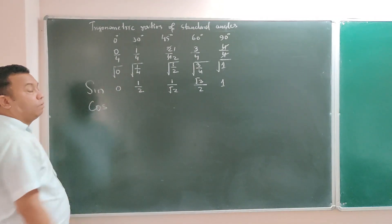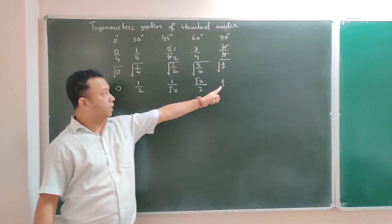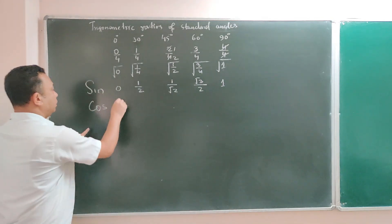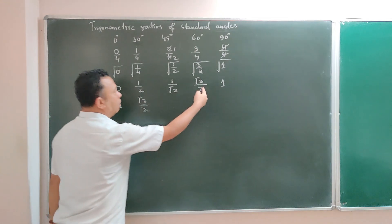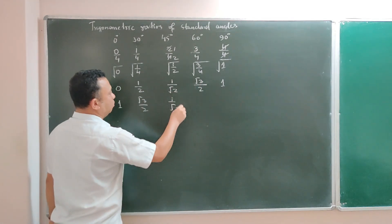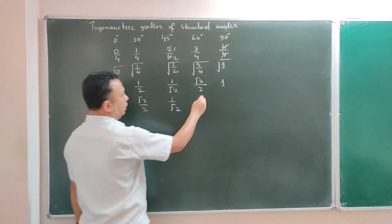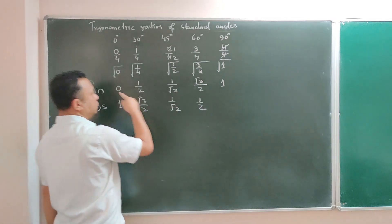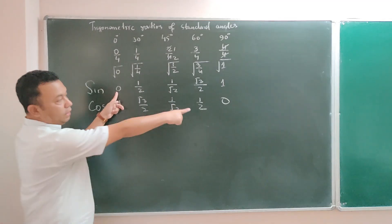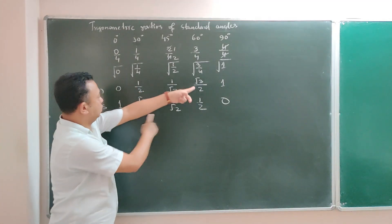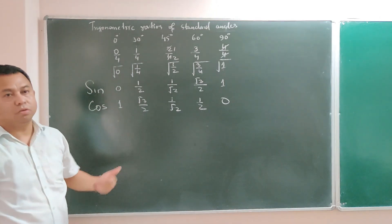Now when you are finding the value of cos, the cos value is written in reverse order of sin. Reverse — so the first number will be 1, then root 3 by 2, then 1 by root 2 (both sin 45 and cos 45 values are the same: 1/√2), then 1/2, and after that 0. So the cos value is the reverse of sine: 0, 1/2, 1/√2, √3/2, 1 → reversed to 1, √3/2, 1/√2, 1/2, 0. Once you know sine, cos is very easy.